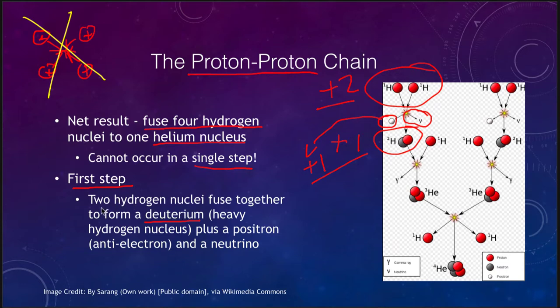The first step takes two hydrogen nuclei, we get deuterium out of it, we also get a positron, which will of course immediately annihilate with an electron producing energy, and a neutrino.